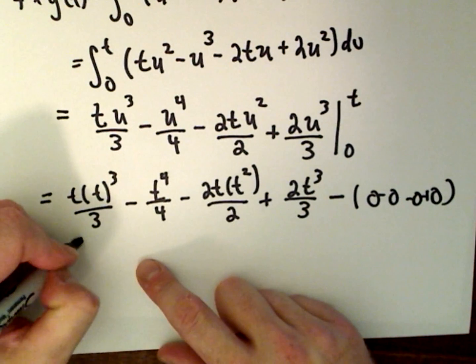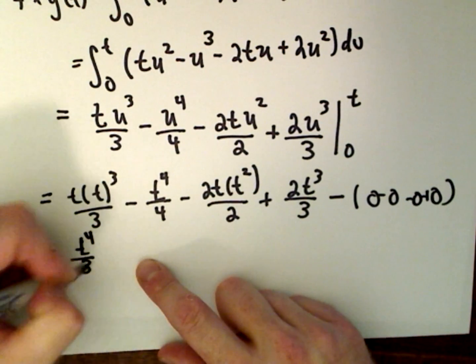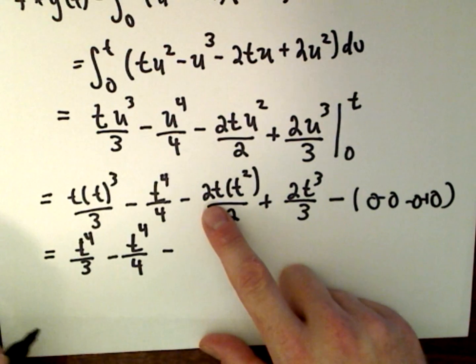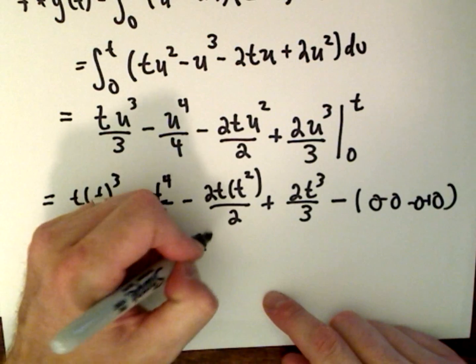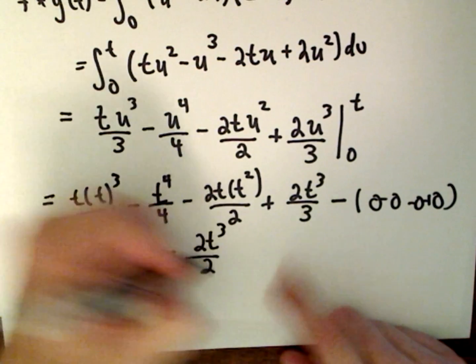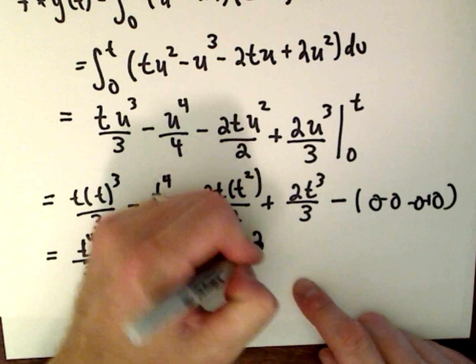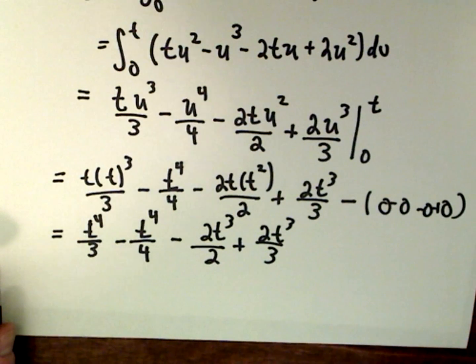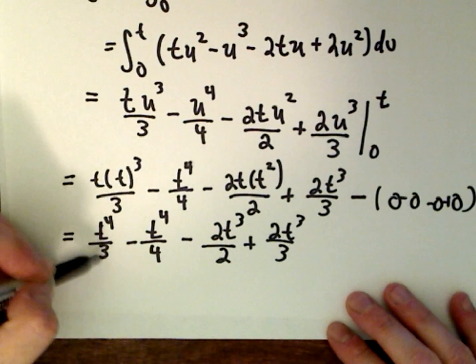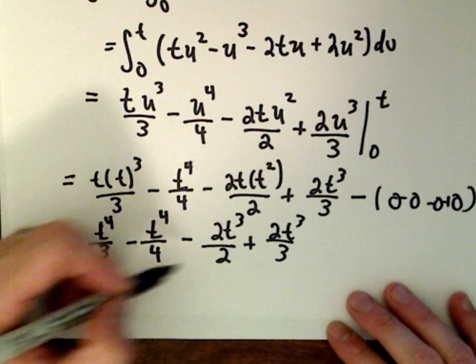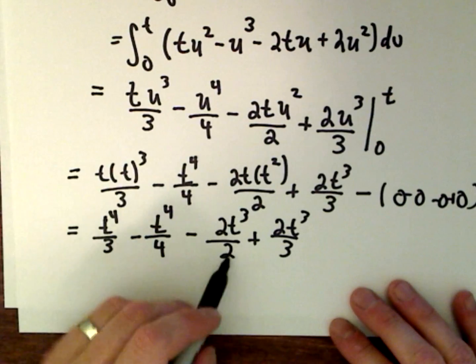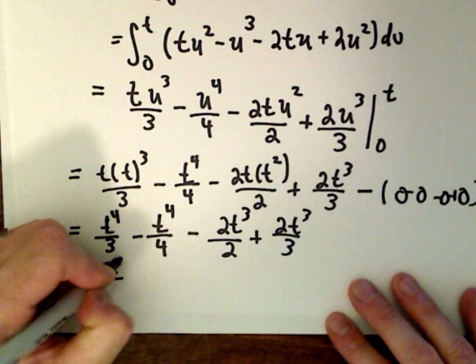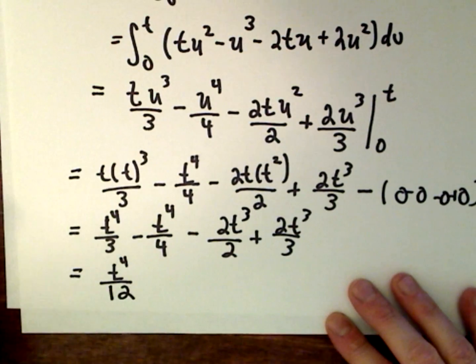So we're going to have t to the third times t, that's t to the fourth over 3, minus t to the fourth over 4, minus we'll have 2t to the third over 2, plus 2t to the third over 3. And I assume if you're in differential equations you'll be okay with the fractions, get common denominators for the first two terms and the second two terms. And after simplifying that I ended up with t to the fourth over 12 minus t to the third over 3.